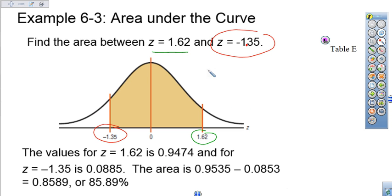Our particular problem is we want to find the area between z = 1.62 and z = -1.35.